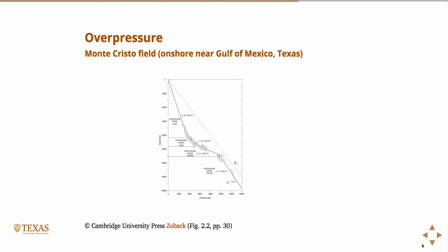So here's some actual data. This is the Monte Cristo field. It's in the onshore area, not too far from here actually, onshore Gulf of Mexico here in Texas. This is pretty characteristic of the Gulf of Mexico, and you'll see an initial sort of right here that is almost hydrostatic, I think it says 0.46 psi per foot. So it's almost hydrostatic down to some depth, down to about 8,000 feet. And then you see this transition zone, and then over here it's almost lithostatic.